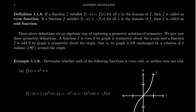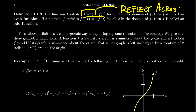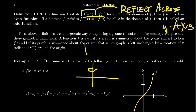Let's consider the case of an even function, where f of negative x equals f of x. When you look at f of negative x, this is a geometric transformation — specifically, a reflection across the y-axis. So if f of negative x equals f of x, that means reflecting the graph across the y-axis changes nothing. You get something like a parabola where reflection across the y-axis doesn't change the graph. An even function is one whose graph is symmetric with respect to the y-axis.